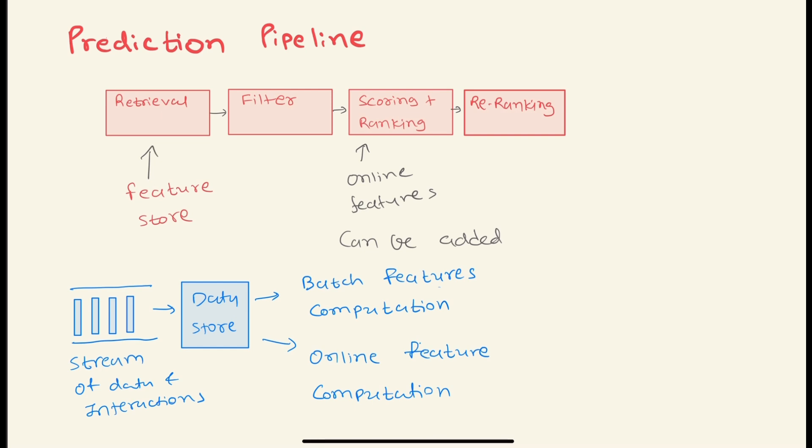Retrieval means we'll get all the posts, and then based on the user - like the user might have blocked that particular author for that post - we have to do those kinds of filtering here. Then we have to do scoring plus ranking, so we first predict the probability, and then based on those probabilities we might rank it, or maybe we also do a learning-to-rank kind of model. In that case, we just do the ranking. The next step would be re-ranking, where based on the recency or freshness of the post or fairness of the post, we might have to do some shuffling.